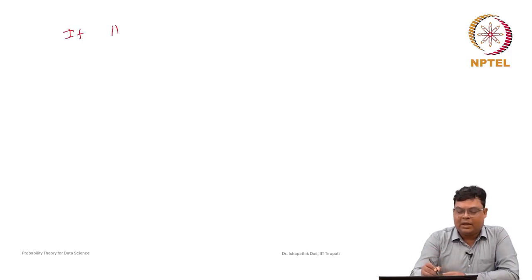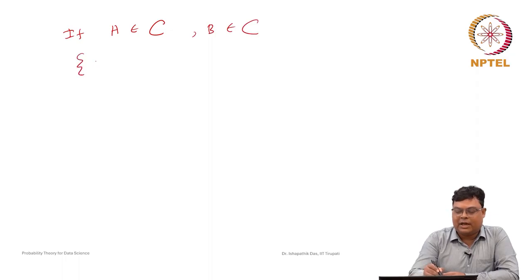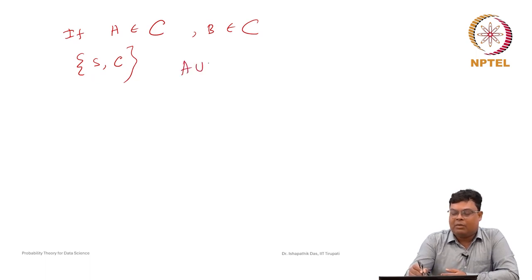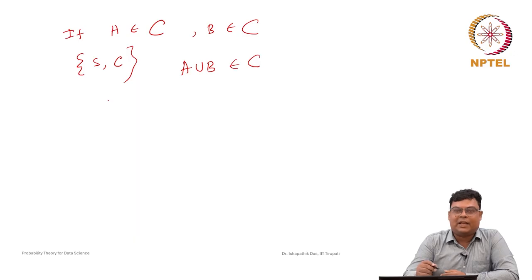Since these are all subsets, if A is an event, that means it is in a sigma field, and B is also an event, that means B will also be in a sigma field. Suppose in general, let S be the sample space and C be some collection of subsets — a class of subsets of S — that is a sigma field we discussed. Then A union B, by definition of a sigma field, will be in C, so it will be an event again, because any element in C is defined as an event.